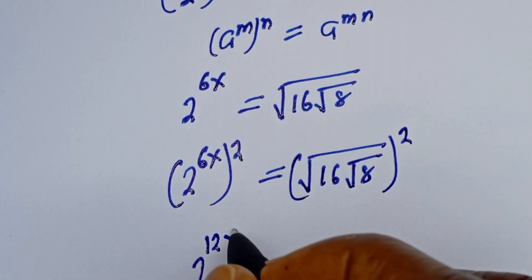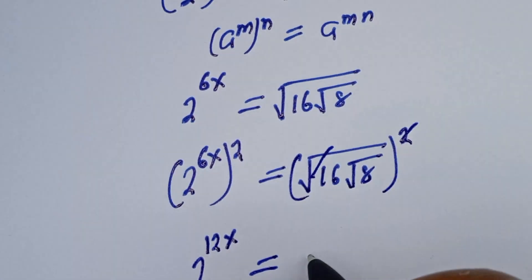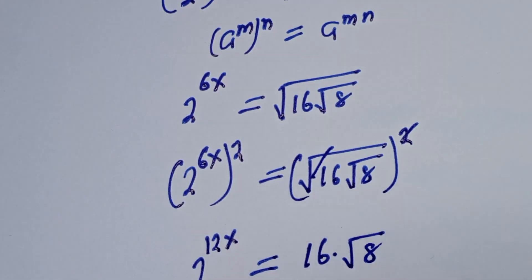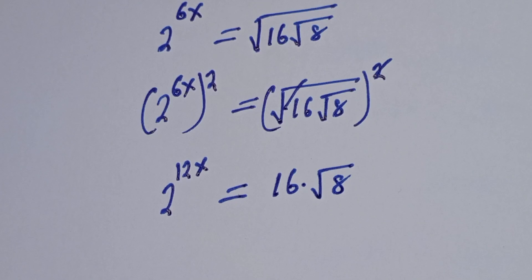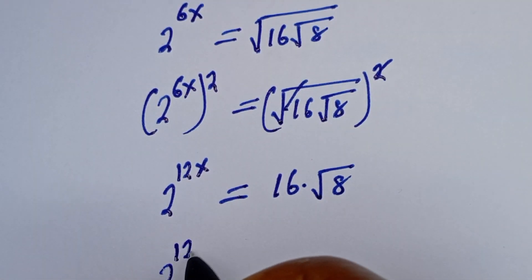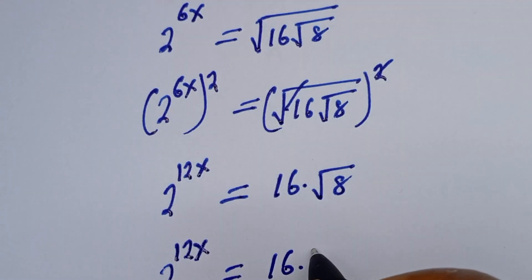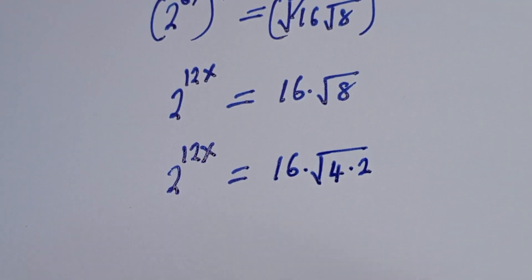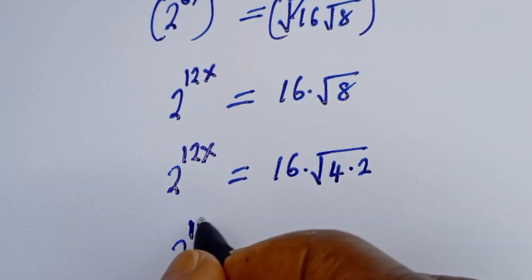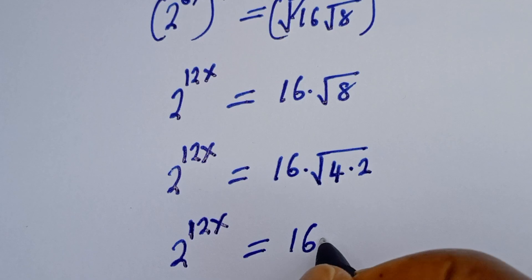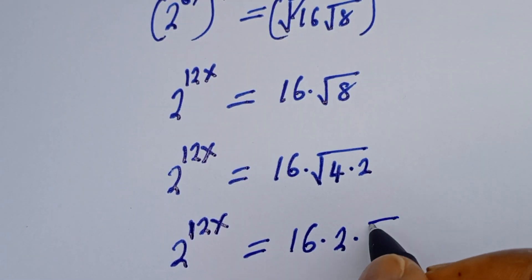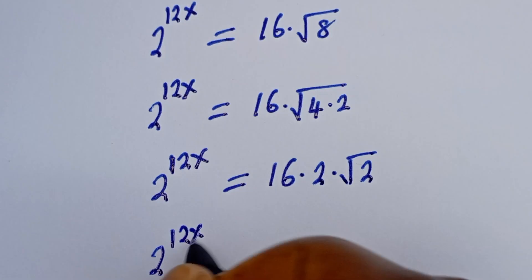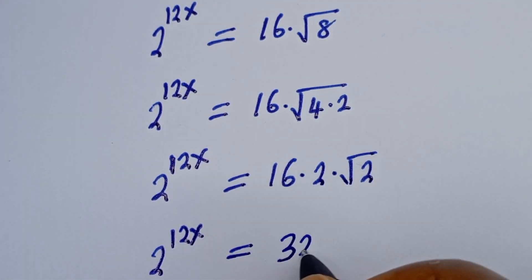This gives us 2 to the power of 12s is equal to 16 times 4, which simplifies — 16 times 2 gives 32, so we have 32 times square root of 2.